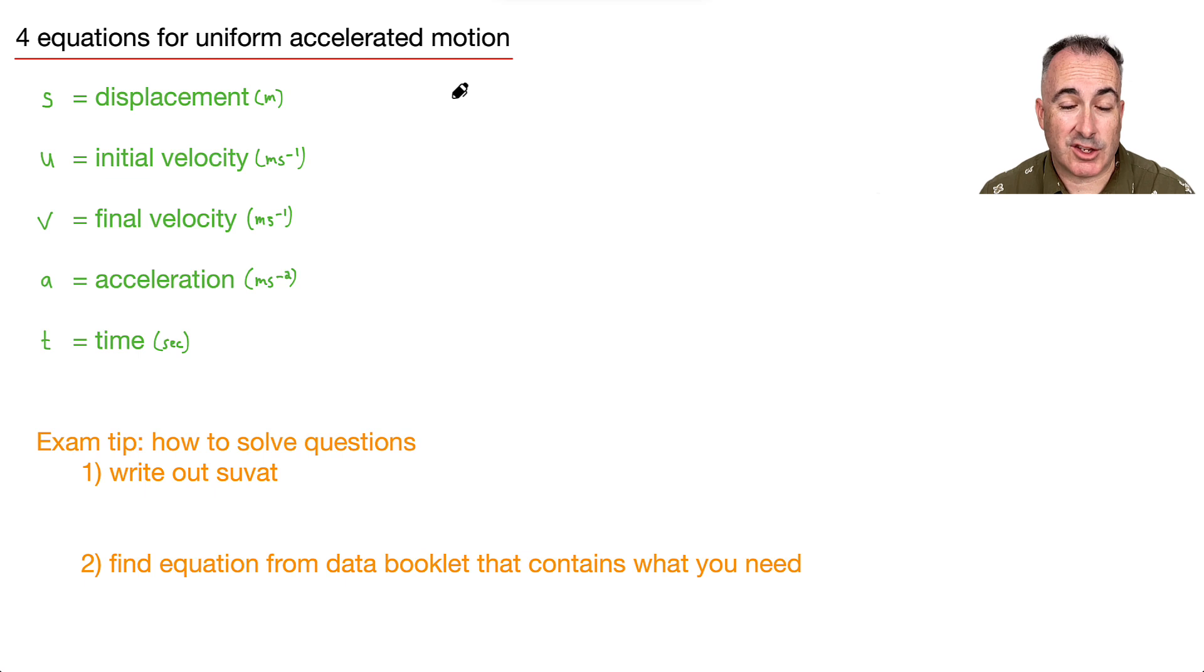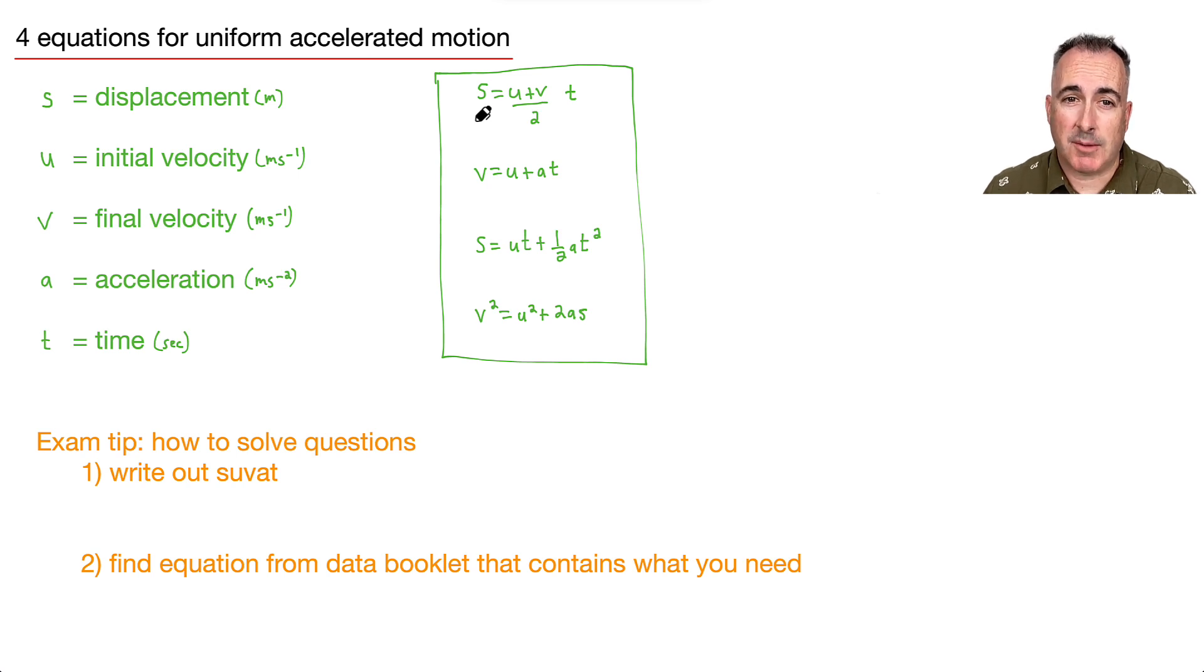What are these equations? You don't have to memorize them. They're given. S equals U plus V over 2 times T. The next one goes V equals U plus AT. Next one goes S equals UT plus half AT squared. And the last one goes V squared equals U squared plus 2AS. Again, you don't have to memorize these. These are in your data booklets, so hooray for that. But they're extremely important. Make sure you know how to use these and when to use these.